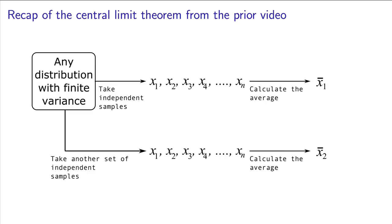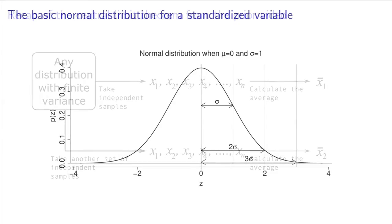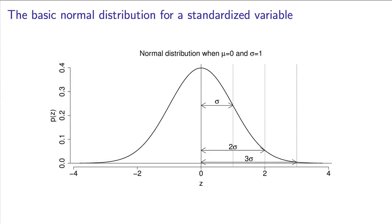To see why this is important, let's first quickly recap what the normal distribution looks like and learn more about its properties. The distribution appears as shown here. It is clearly a symmetric distribution.